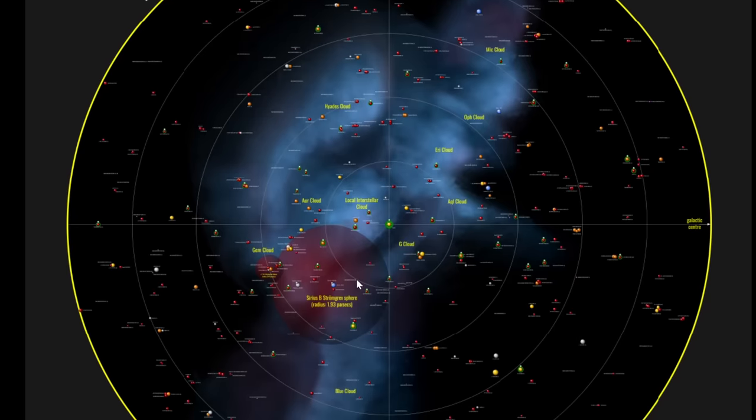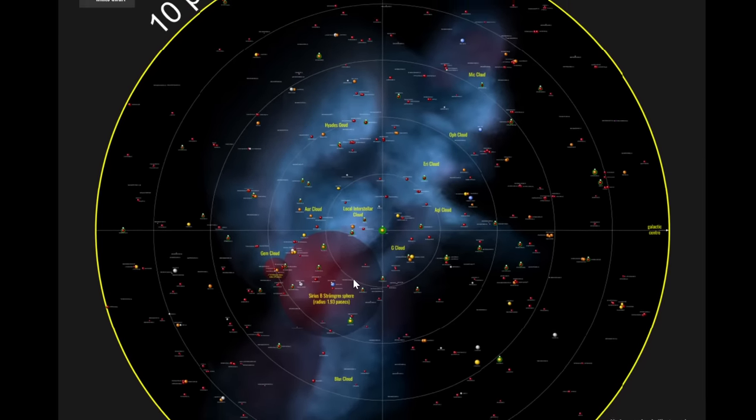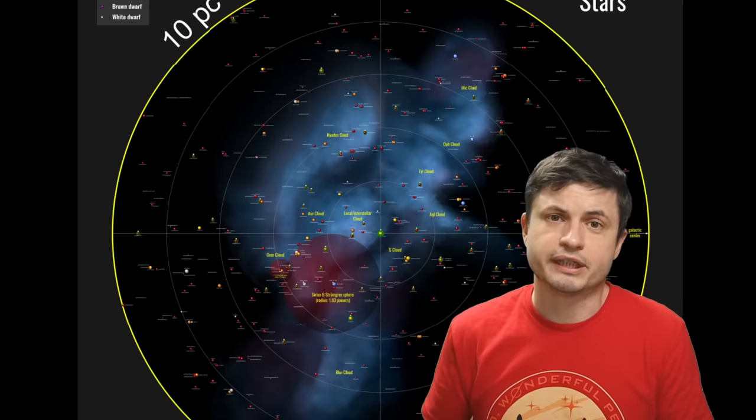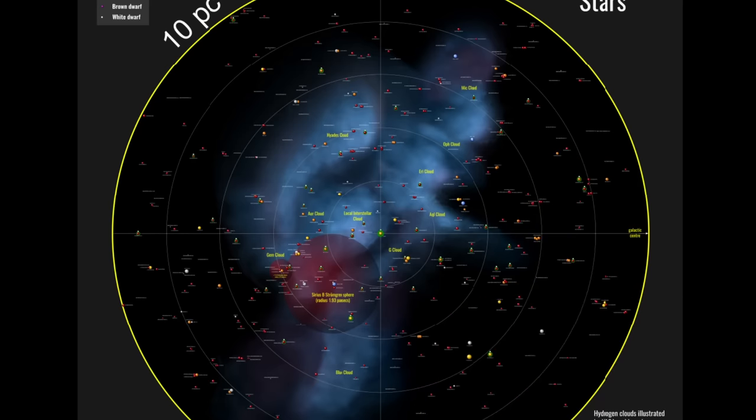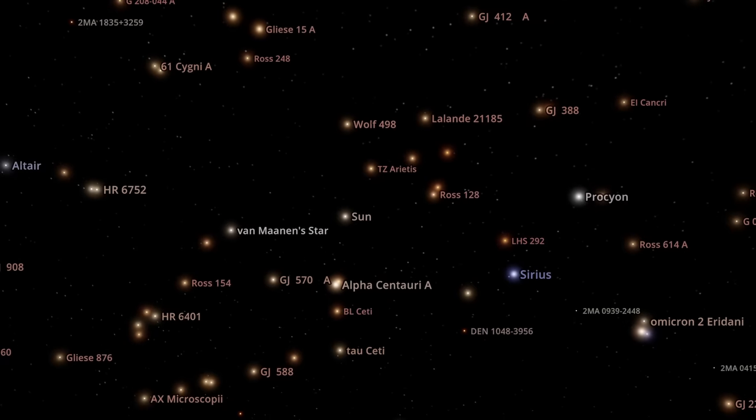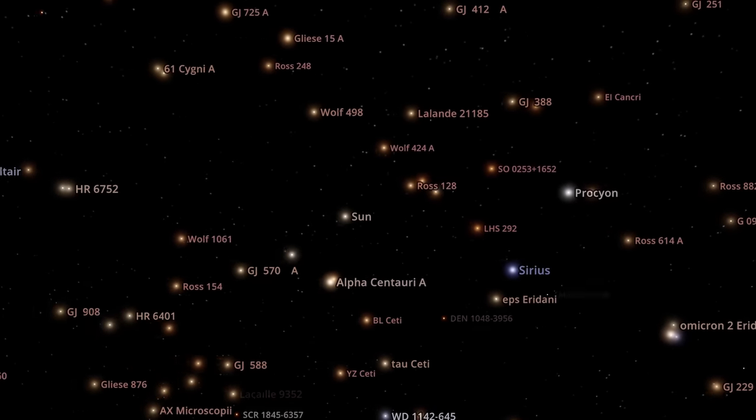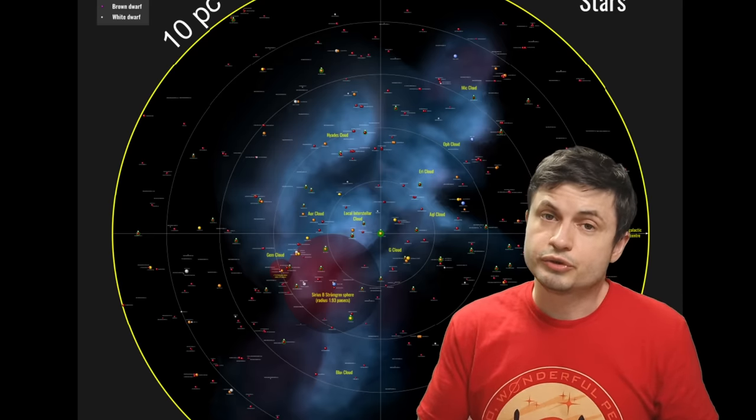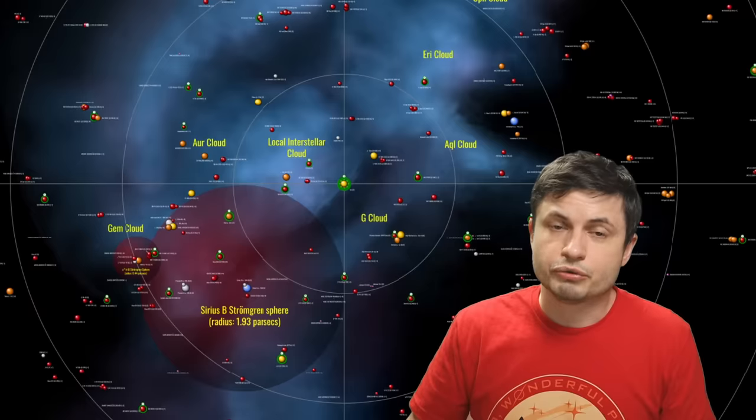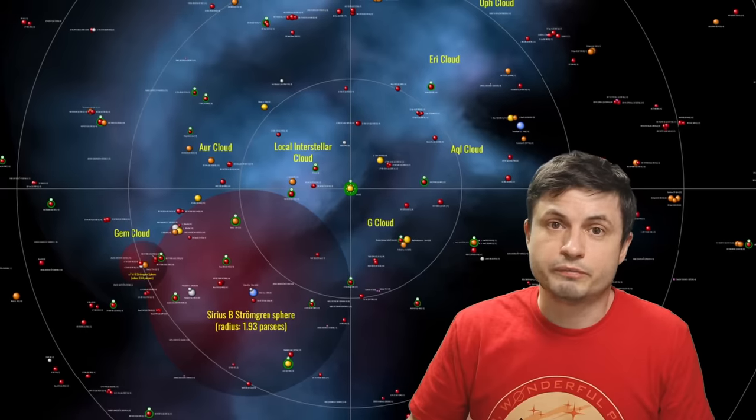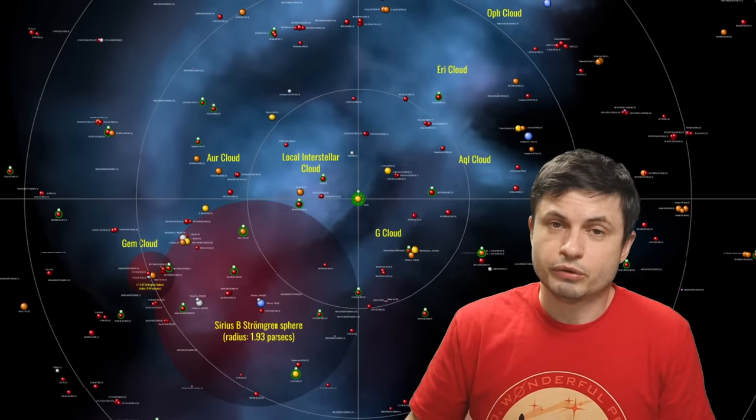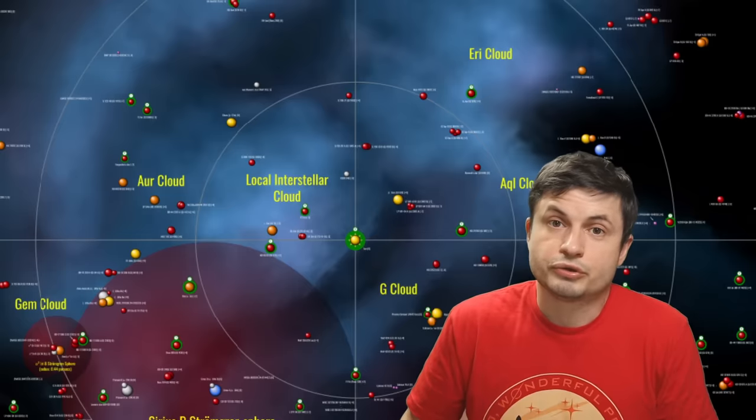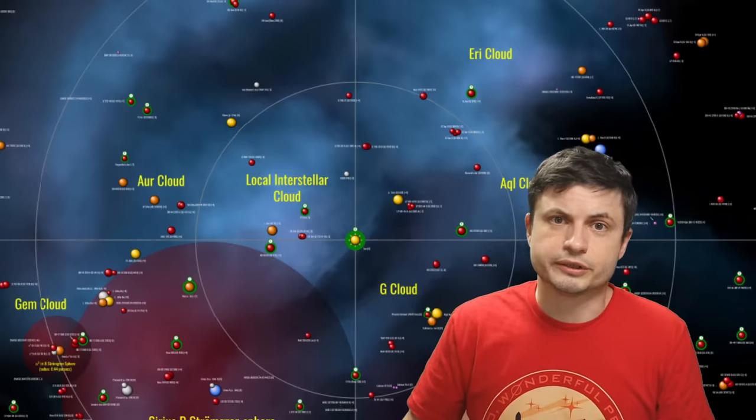This map very accurately shows the nearby 10 parsecs or 32.6 light years away from planet Earth with 540 different objects marked at the relative location and distance. Obviously this is a two-dimensional map trying to represent three-dimensional space, so it's not super accurate but it is accurate enough and useful enough for us humans. It also serves as an excellent guide to direct us toward some of the nearest interesting objects in outer space and serves a very important educational purpose.